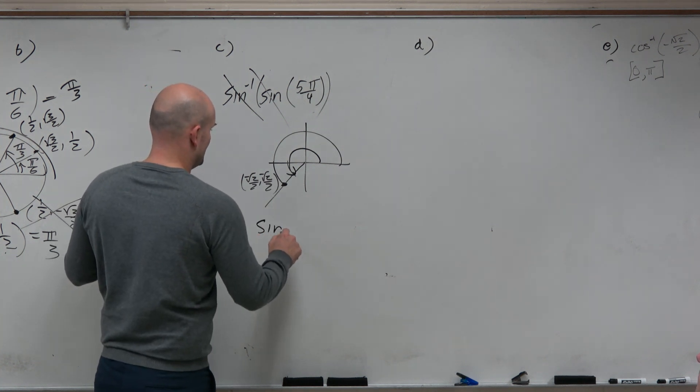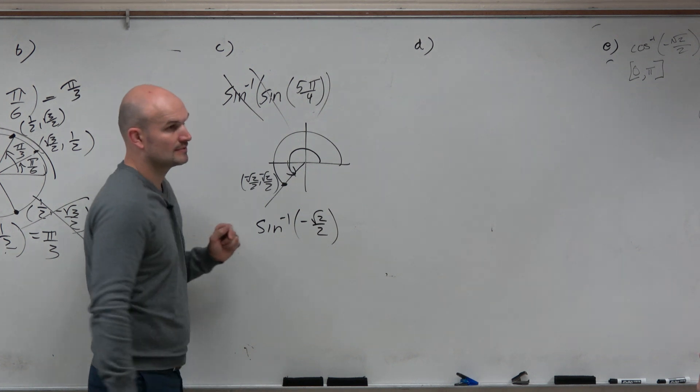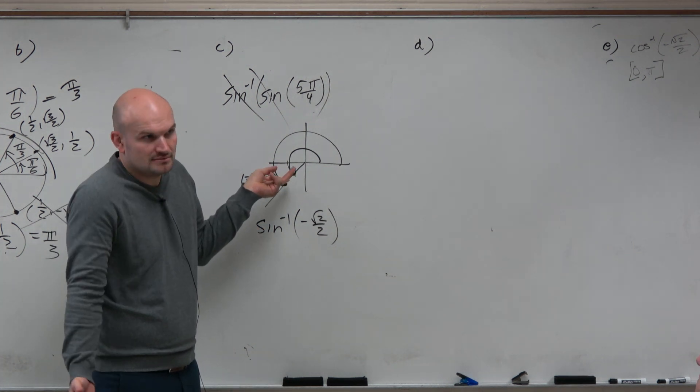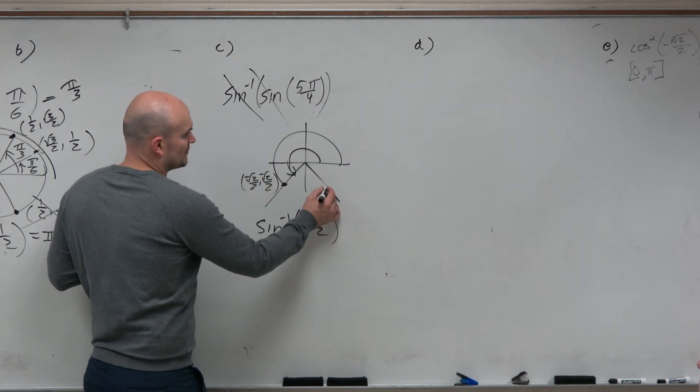So then I say sine inverse of negative square root of 2 over 2. Well, again, we know it's not going to be in the third quadrant. Because remember I said that none of the angles are in the third quadrant for inverse. So therefore, it has to be the point that's over here.